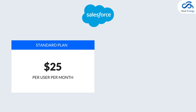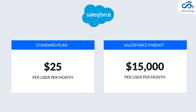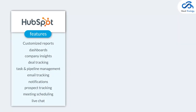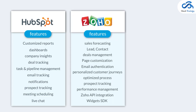Salesforce plans can cost from $25 per user per month for standard Sales and Customer Service plans, to over $15,000 per month for marketing options like Salesforce Pardot. Number two: features. HubSpot CRM offers features such as customized reports and dashboards, company insights, deal tracking, tasks and pipeline management, email tracking and notifications, prospect tracking, meeting scheduling, and live chat.